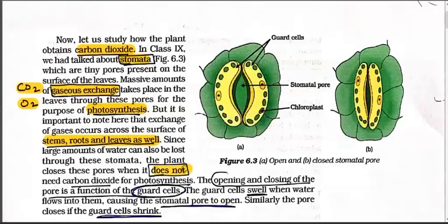Since a large amount of water can also be lost through stomata, the plant closes the pore when it does not need carbon dioxide for photosynthesis. During night time, since there is no sunlight, photosynthesis will not occur, so the stomata structure remains closed at night. The second diagram shows the closed structure, while the first diagram shows the open structure.